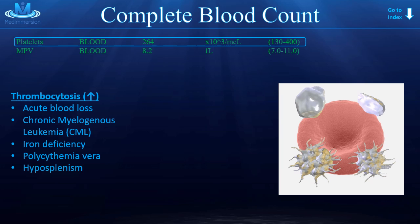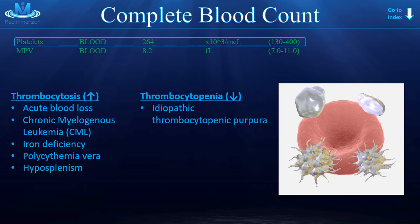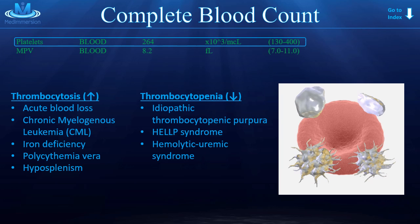Next, on to thrombocytopenia — what could cause a decreased platelet count? Idiopathic thrombocytopenic purpura — try saying that ten times fast. There are a couple of different diseases that fall into that class. HELLP syndrome, which is related in pathology to preeclampsia. Hemolytic uremic syndrome. And also disseminated intravascular coagulation, or DIC.